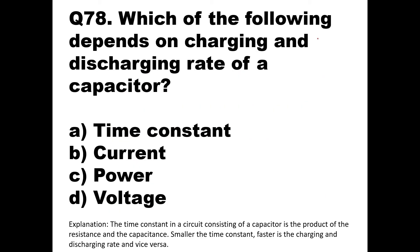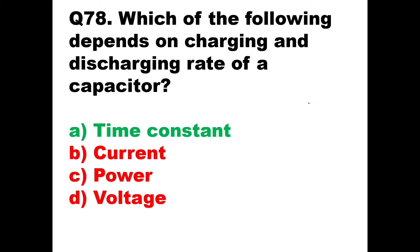Question number 78: Which of the following depends on the charging and discharging rate of a capacitor? The charging and discharging rate depends on the time constant. For an RC circuit, the time constant is R×C. Smaller the time constant, faster the charging and discharging rate and vice versa. Option A is the right answer.